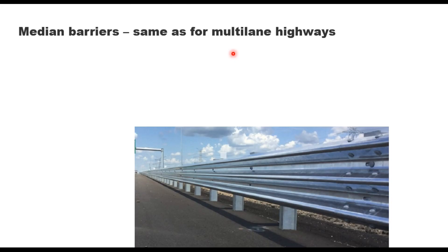Suitable anti-glare measures such as metal or plastic screens shall be provided to reduce headlight glare from the opposite direction. The total height of the screen including the height of the barrier shall be 1.5 meter, and these shall be located in a manner that the vertical tangent to the high beam crest passes through the edge of the paved shoulder.